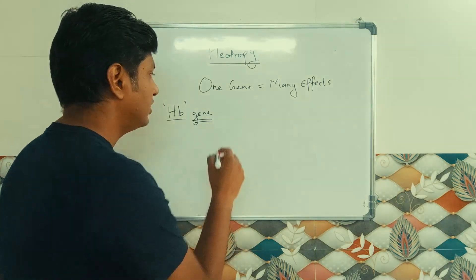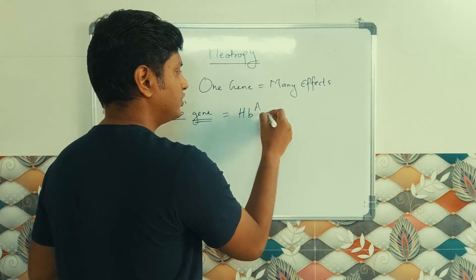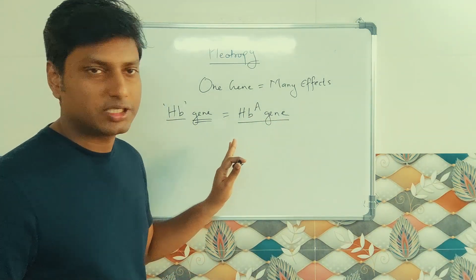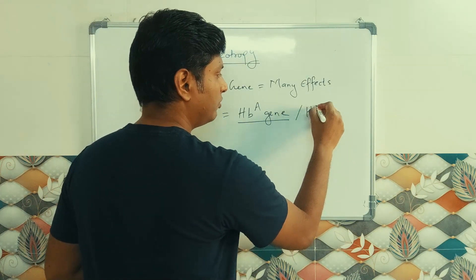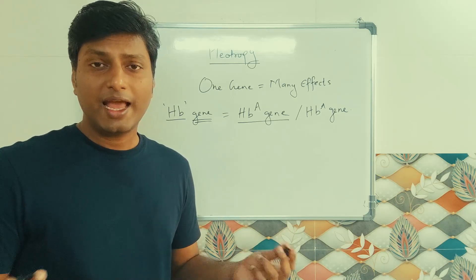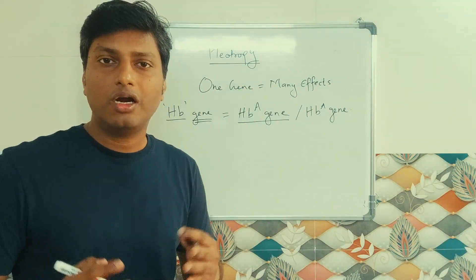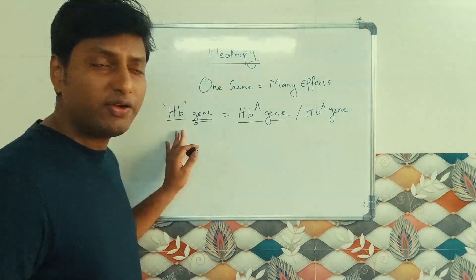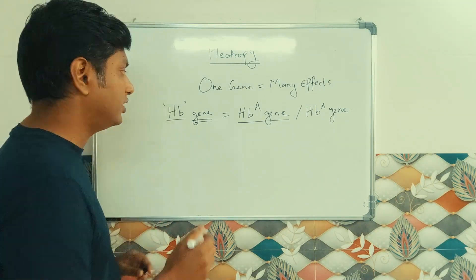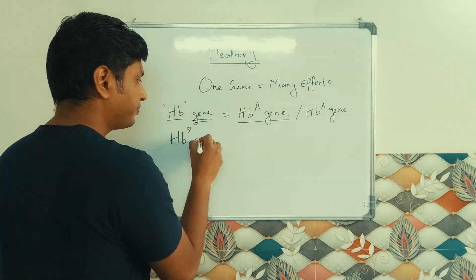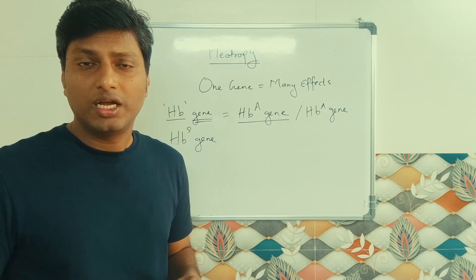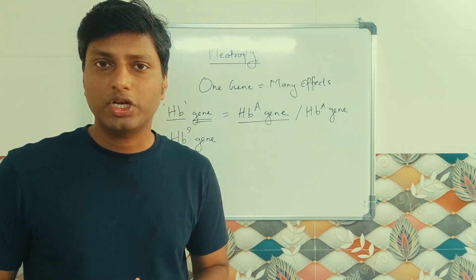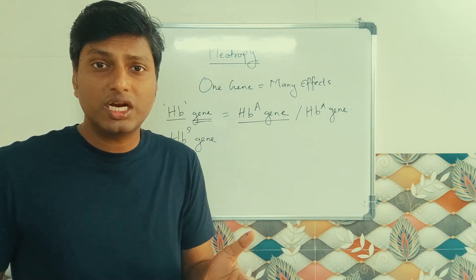In a normal, healthy person there will be two copies of the hemoglobin gene — HbA. Now suppose this particular gene undergoes some change, meaning a mutation. If this hemoglobin gene undergoes mutation, it can become the HbS gene, where the 'S' stands for sickle.